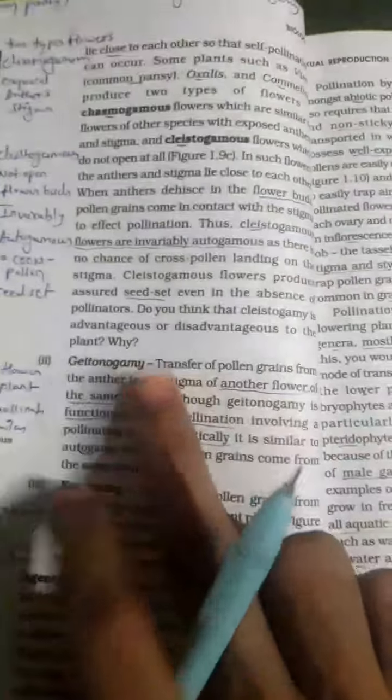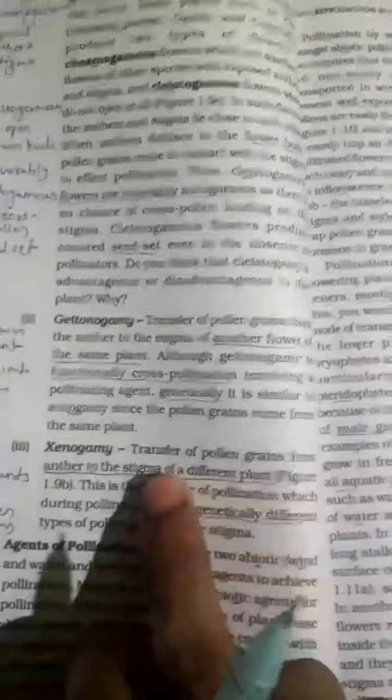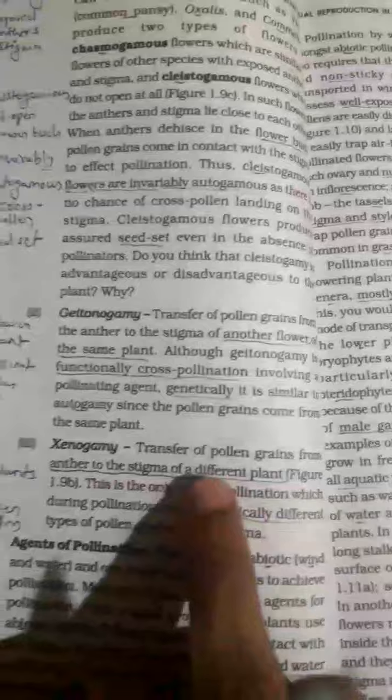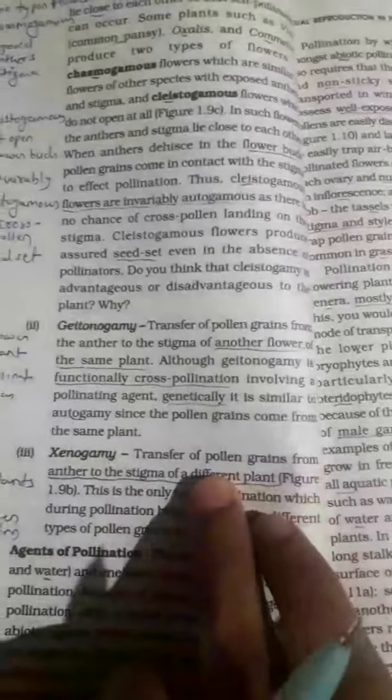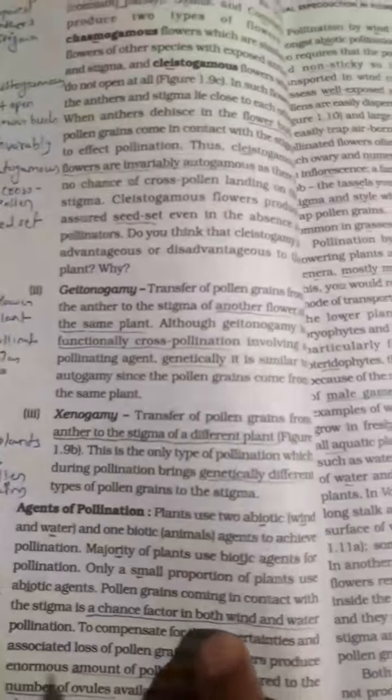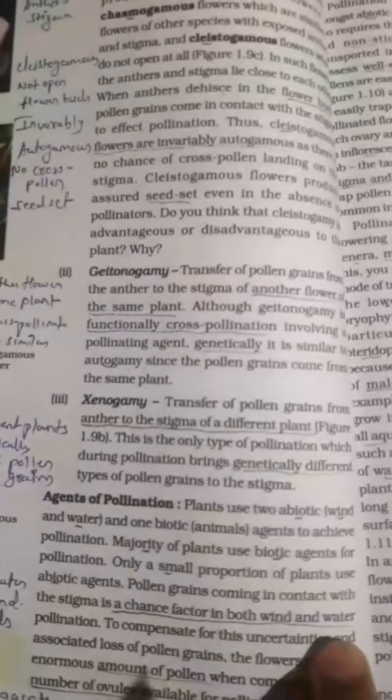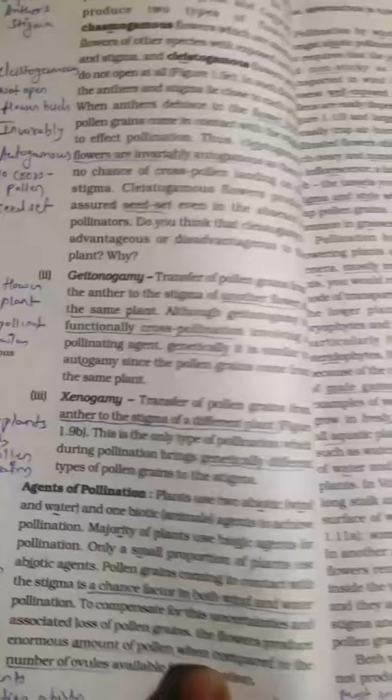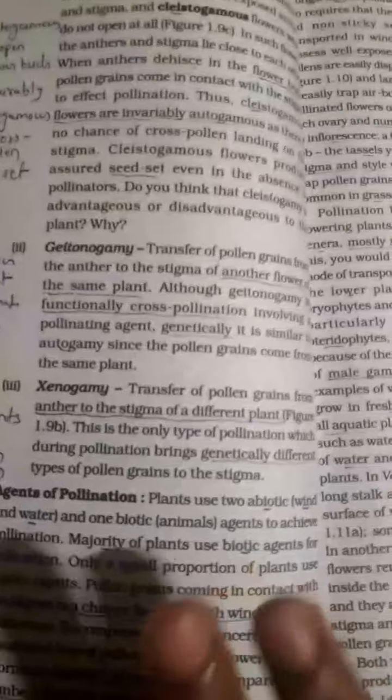Geitonogamy is pollination between different flowers on the same plant. And pollination is a chance factor in case of wind and water. Remember this point is important.